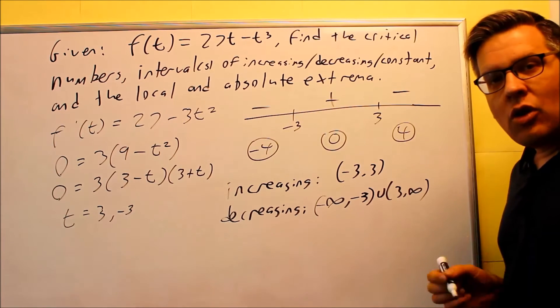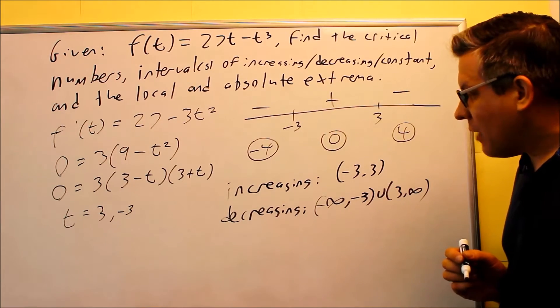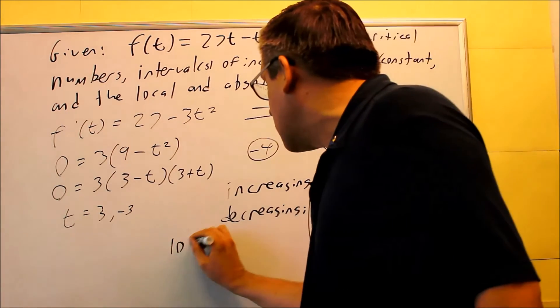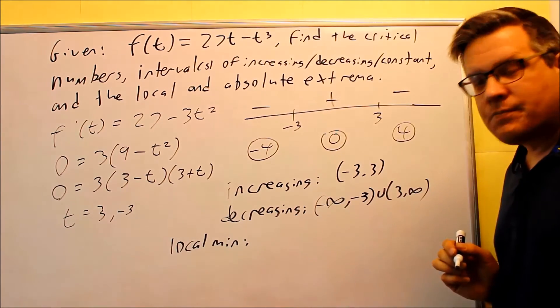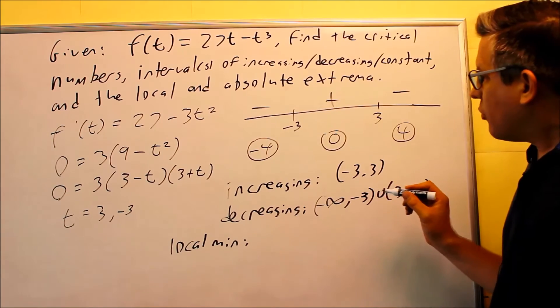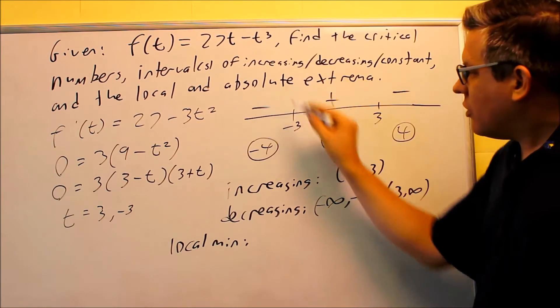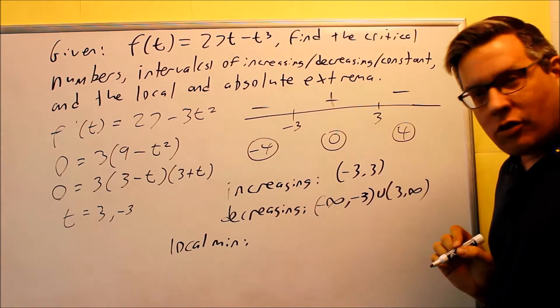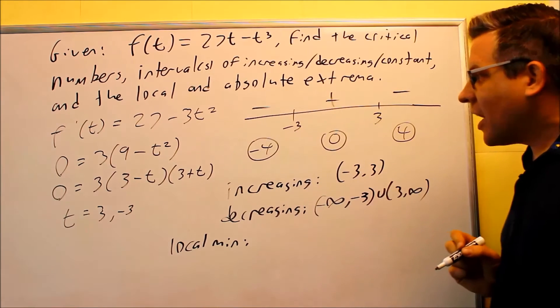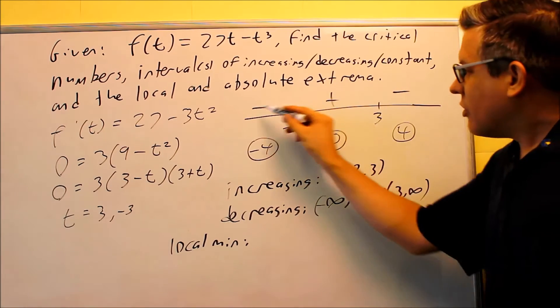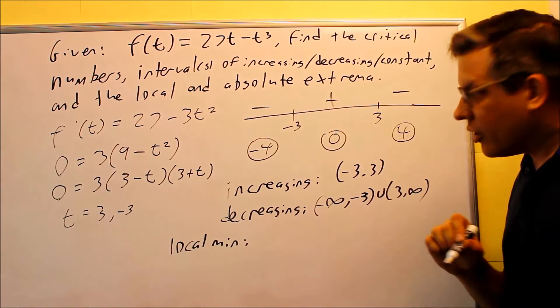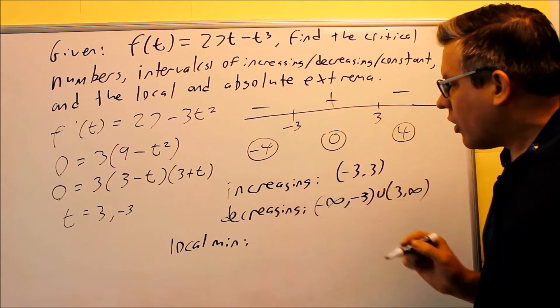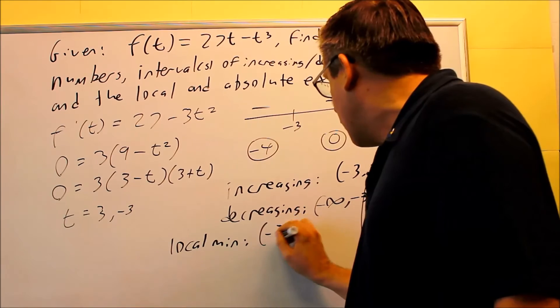Next, we want to look for relative mins and relative maxes. Okay, let's do the local min. Let's do that one first. For a min we're looking for where you have decreasing and increasing. So you're looking for negative to positive. So if you see negative to positive, that's using the first derivative test that we talked about earlier. That means that you have a relative local min at negative 3.